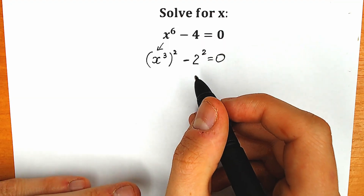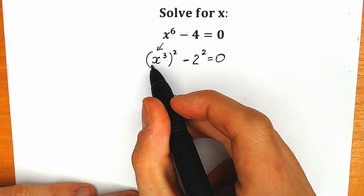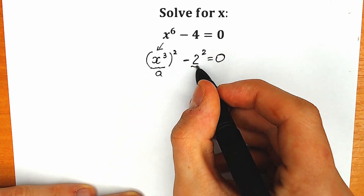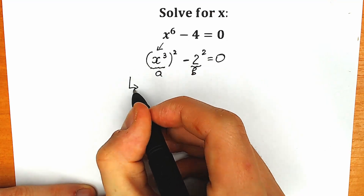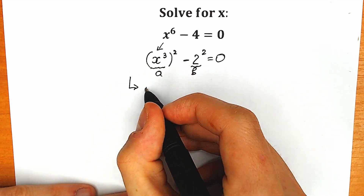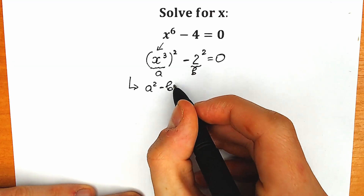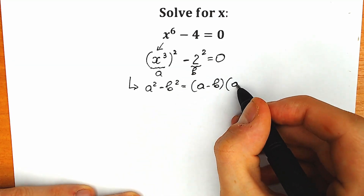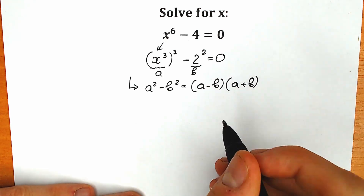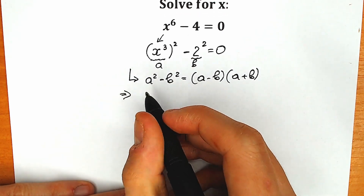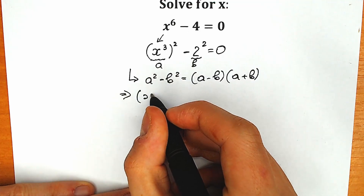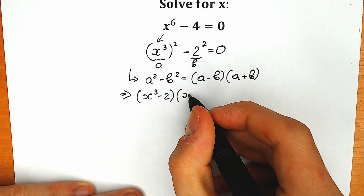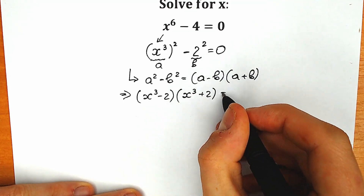Right now we can easily express this in terms of difference of squares. We have x cubed — this is our a — and we have 2 — this is our b. So we can express this as a squared minus b squared, which equals a minus b times a plus b. So factoring, we get x cubed minus 2 times x cubed plus 2 equals 0.